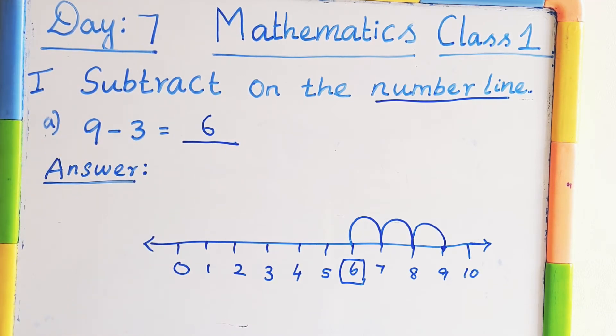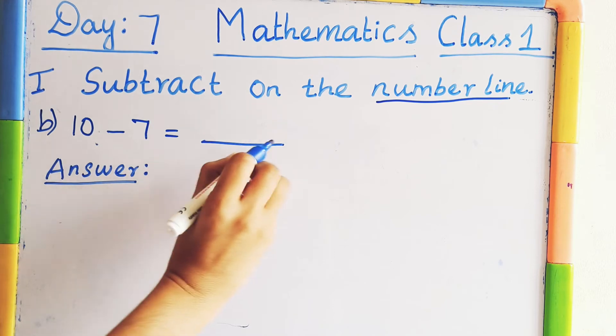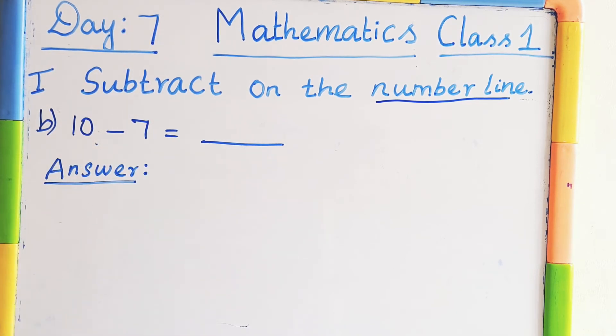That's it. Let's see one more model. Then you can understand very easily. The second question is 10 minus 7 equal to dash. Okay. Now we have to find the answer.